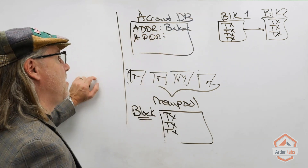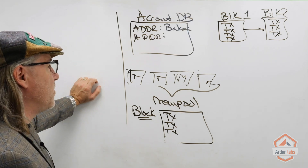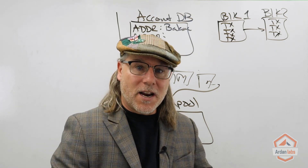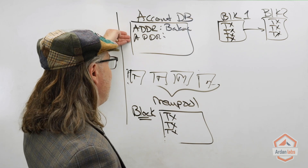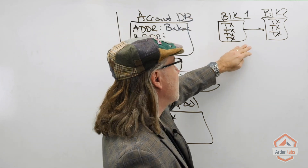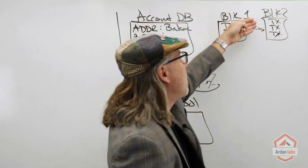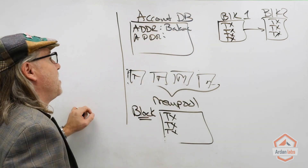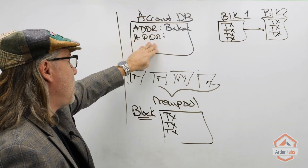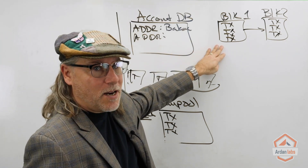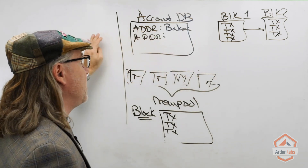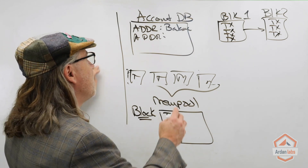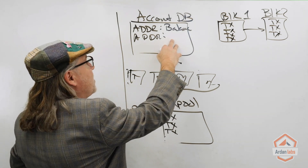Block two eventually gets sealed into the system and the accounting database gets updated. If we ever restart our server and want to rebuild the accounting database from scratch, all we need to do is read Genesis, bring in those initial addresses with their balances, then read the blockchain one block at a time in order, walk through the transactions, and apply the accounting. So this database doesn't have to be persisted — it can always be recreated.